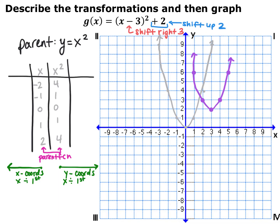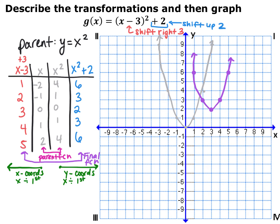Starting with my y's — I don't have any multiplication or division, so I go straight to the translation of up 2. I take every y-coordinate and add 2, which vertically shifts it up 2. There's nothing else affecting my y-coordinates, so I'm done with the y side. On the x side, I also have no multiplication or division, so I do x minus 3 — but we always do the opposite for x's, so I add 3 to all x-coordinates to shift right.